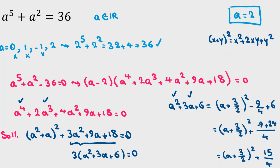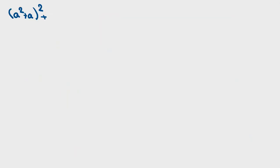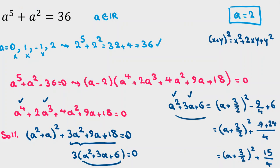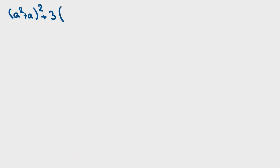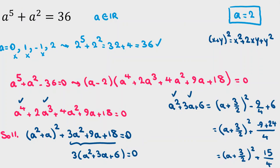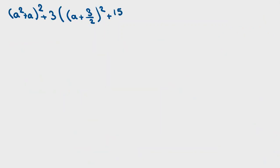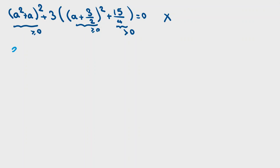Putting it all together, the quartic expression equals (a squared plus a cubed) squared plus 3 times [(a plus 3/2) squared plus 15/4] equals 0. Since we are working in real numbers, the squared term is at least zero and the 15/4 term is strictly greater than zero, so the entire expression is always positive. It can never equal zero. That completes Solution 1.